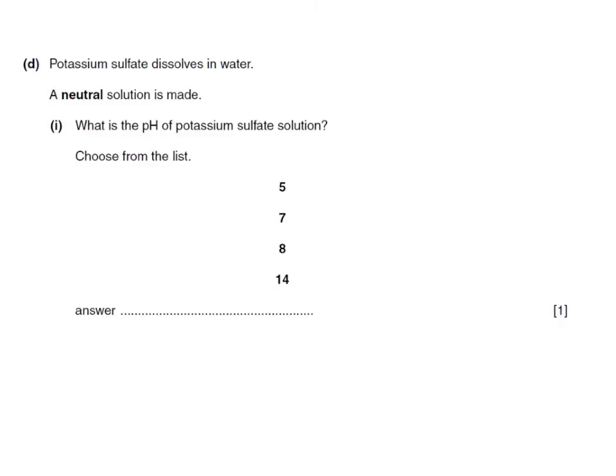Finally, potassium sulfate dissolves in water. A neutral solution is made. What's the pH of potassium sulfate solution? Well the neutral solution has a pH of 7. So the answer is 7.